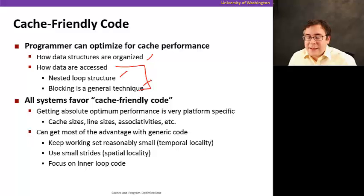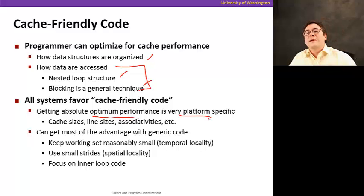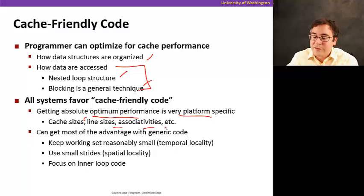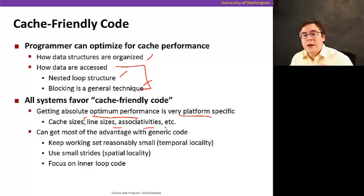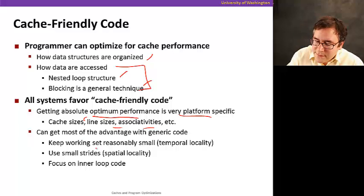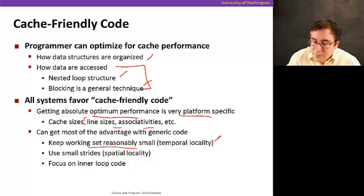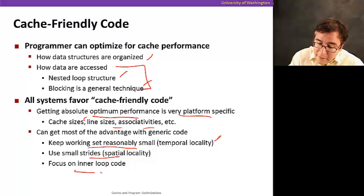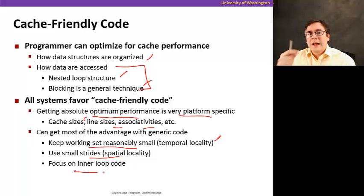The important thing to keep in mind for cache-friendly code is that you can optimize code for cache performance, but it really depends on how data structures are organized, how data are accessed, and how the loop nest structure works. Think about blocking — it's a general technique. When writing generic code: keep the working set size reasonably small to take advantage of temporal locality, use small strides to take advantage of spatial locality, and focus on inner loop code.